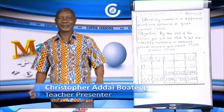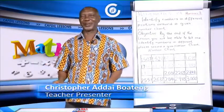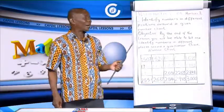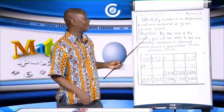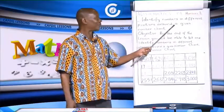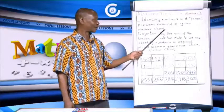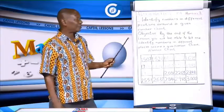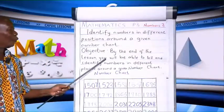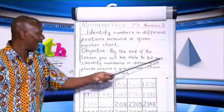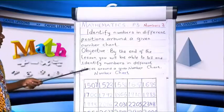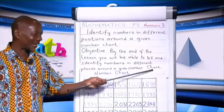My name is Christopher Adebaten, your Mathematics teacher. Today our topic is: identify numbers in different positions around a given number chart. The objective is, by the end of the lesson, you will be able to tell and identify numbers in different places around a given number chart.